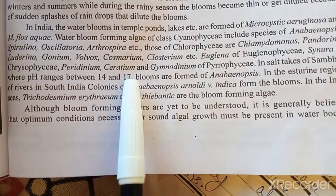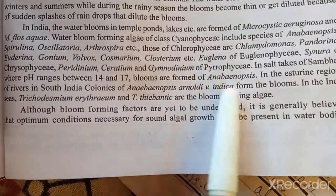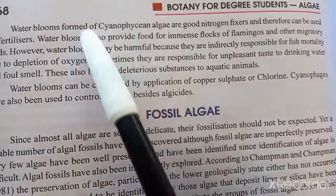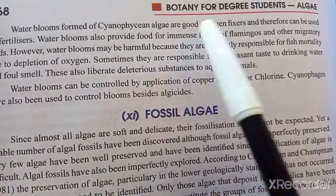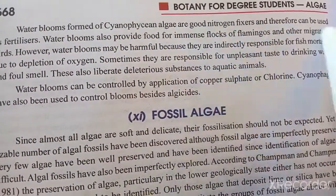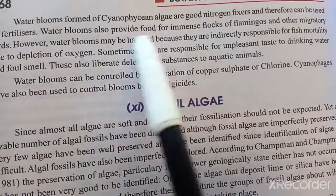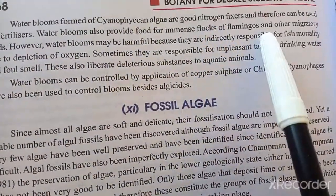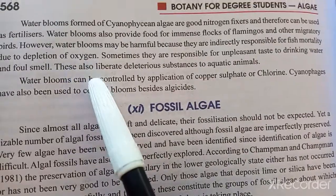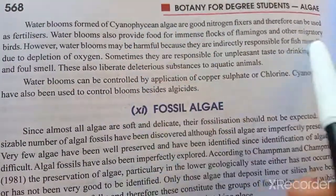Between pH 14 to 17, bloom-forming Anabaena species are found. Water blooms are formed by Cyanophyceae — blue-green algae — which are good at nitrogen fixation. They can be used as a fertilizer and also provide food for waterfowl, with this nutrition supporting other migratory birds as well.